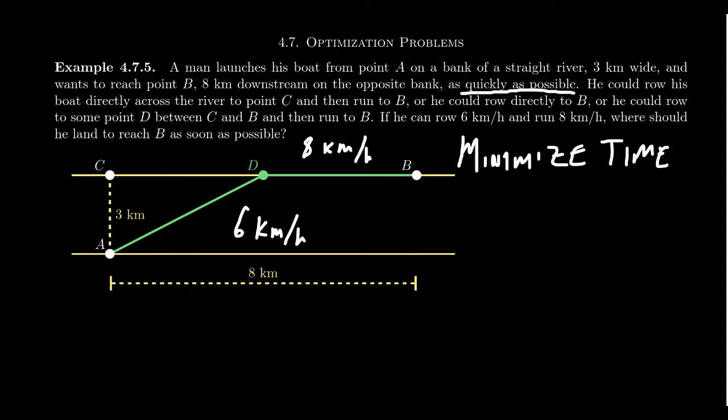He has to decide how far is he going to row down the river and how much is he going to run. Imagine the horizontal distance between point C and D, call that x. If the total distance between C and B is eight, then the distance from D to B will be 8 minus x. How about the distance from A to D? As this is part of a right triangle, one side is x, the other side is three. The distance along the diagonal is going to be the square root of x squared plus 9, just using the Pythagorean equation.